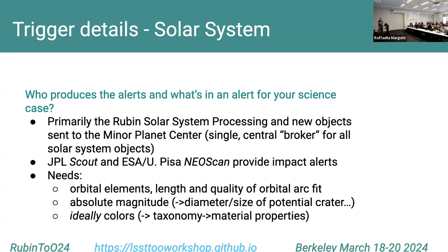Triggers will contain orbital elements so we know where to point, the length and quality of the orbital fit which tells us how fast the uncertainty is growing, and what kind of facility is needed to re-find and localize it. We want the absolute magnitude, which gives us the diameter or potential crater size if it is actually an impacting asteroid. Ideally we would like colors, which gives a rough handle on taxonomy, material properties, and how large an impact event it might produce.